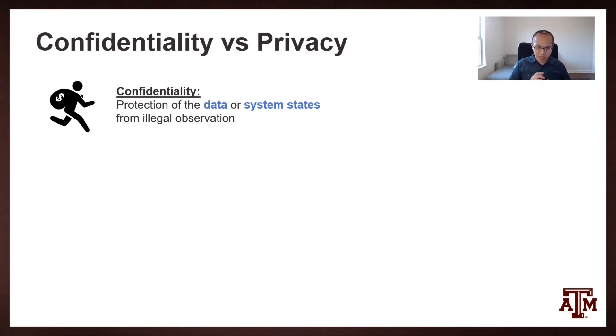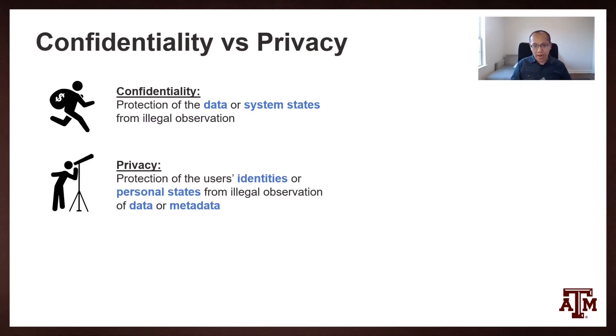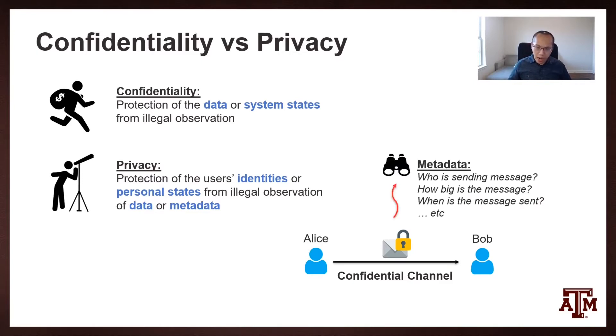Another thing we need to clarify is the distinction between confidentiality and privacy. In a lot of sense, they are very similar, but confidentiality is focused on the protection of the data or the system states, while privacy is focusing on the protection of the user's identities or personal information from illegal observations of both data and metadata. The reason that metadata matters here is because even if Alice is communicating with Bob through confidential channels, there's a chance that the channel itself will leak metadata, including who is sending the messages, how big the messages are, and the timing of messages being sent. Therefore, although privacy is also protecting data, it poses a unique set of challenges from the protection of confidentiality.